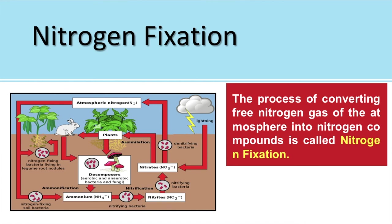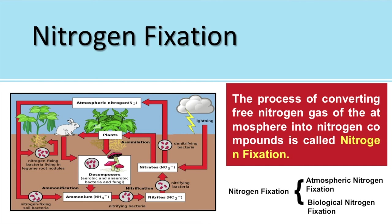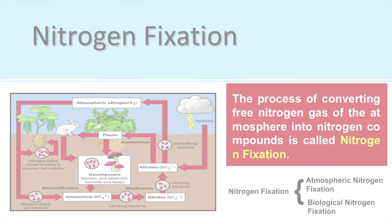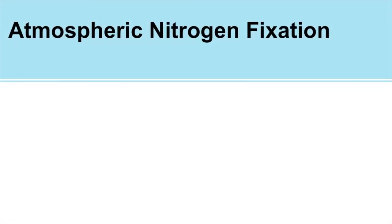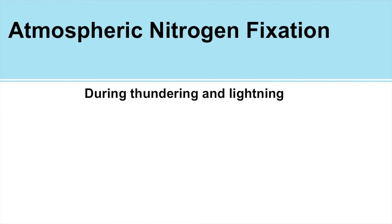There are two ways through which nitrogen fixation naturally takes place: atmospheric nitrogen fixation and biological nitrogen fixation. In atmospheric nitrogen fixation, whenever thundering and lightning takes place, the nitrogen and oxygen present high up in the atmosphere react because the temperature during lightning is very high. Due to that, nitrogen and oxygen combine and form nitric oxide (NO).